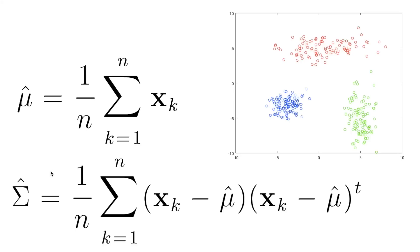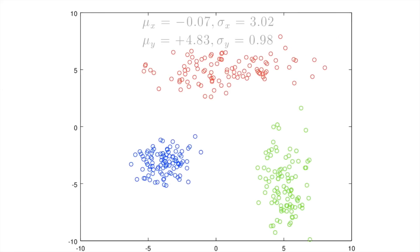When discovering the parameters of these three classes, we compute the average and Sigma, the standard deviation. For example, mu at index X is minus 0.07 — so the average of this distribution is close to zero — and the standard deviation is 3, meaning the X direction goes 3 to the left and 3 to the right. In the Y direction, the average of the values is close to 5, specifically 4.83, and Sigma is almost 1, so it goes plus 1 and minus 1 in the Y direction. We do the same for the other classes.